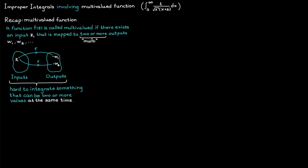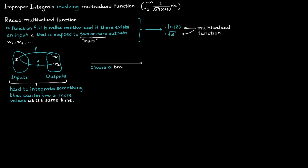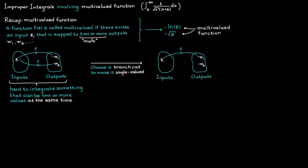Some typical examples of multivalued functions you are going to look out for in this course are the logarithm and the square root function. Both of these two are multivalued, but we can make them single-valued by choosing a branch cut. When you choose a branch cut for a multivalued function, it's the same thing as restricting it so that it only can map one input value to one output value, which is going to be so much easier to integrate.